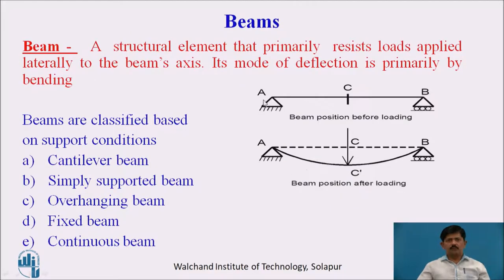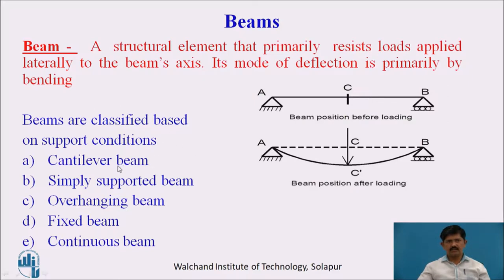Before we start, we will see what is a beam. A beam is a structural element that primarily resists load applied laterally to the beam's axis, and its mode of deflection is primarily by bending action. The beams may be classified depending upon support conditions: cantilever beam, simply supported beam, overhanging beam, fixed beam, and continuous beam.